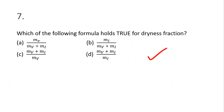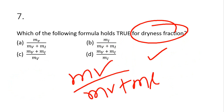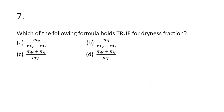Question 7: which formula holds true for the dryness fraction? The dryness fraction is defined as m_v / (m_v + m_l) — mass of vapor divided by total mass. Option A is the correct answer.